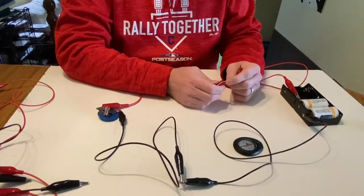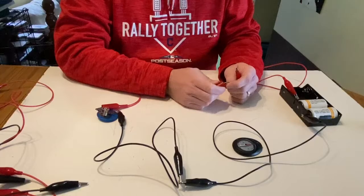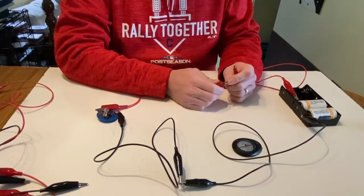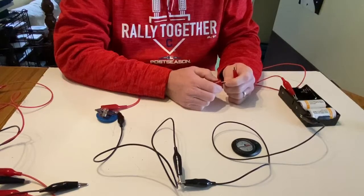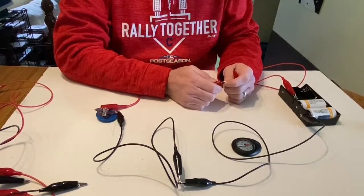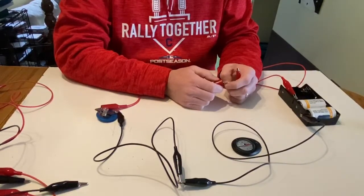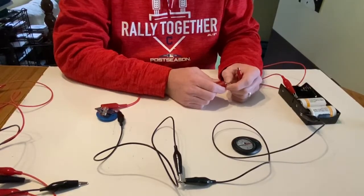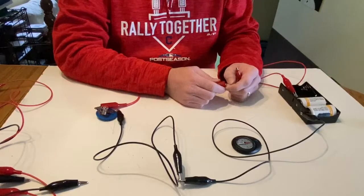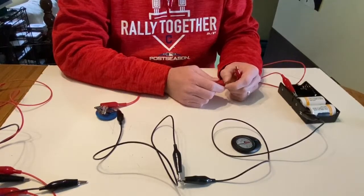And we saw that the bulbs got dimmer and the current slightly decreased each time I added a bulb. And the term that we use for adding bulbs in that way is what we call adding bulbs in series. Series is when we are putting things into the same loop.